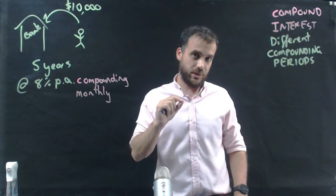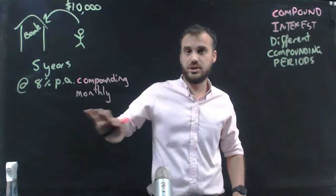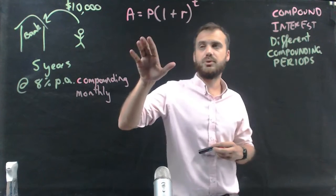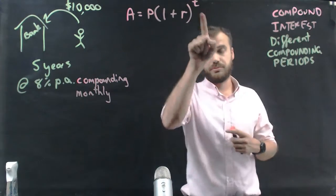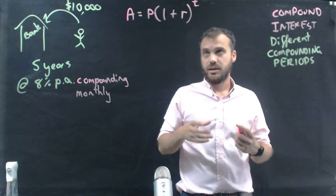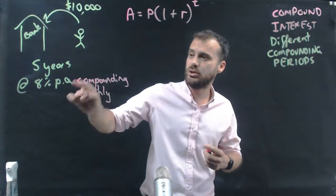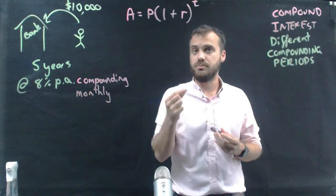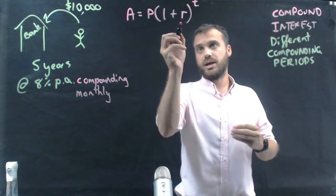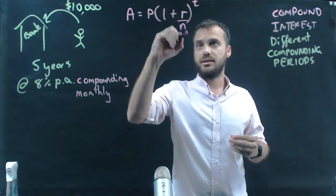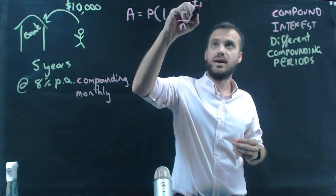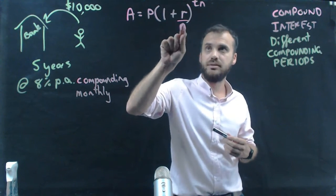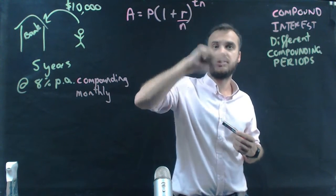Let's amend our formula to deal with this new situation. The formula you've learned is A equals P times 1 plus R to the power of T. To deal with different compounding periods, we add N to our formula. Now it says A equals P times 1 plus R divided by N to the power of T times N.